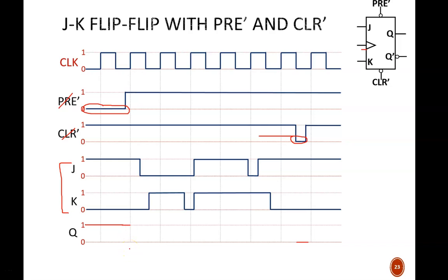Now, I see that J equals one and K equals zero. This is set mode, so Q remains at one, and will do so at least until the next positive edge. Here, J equals zero and K equals one. This is the instruction for reset, so Q drops to zero. At the next clock cycle, J and K are both low, which means no change, so Q remains at zero.